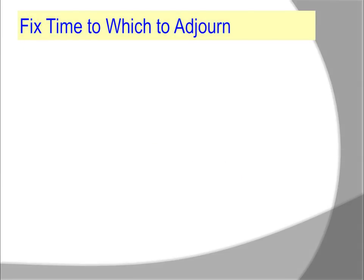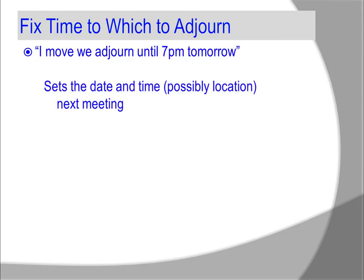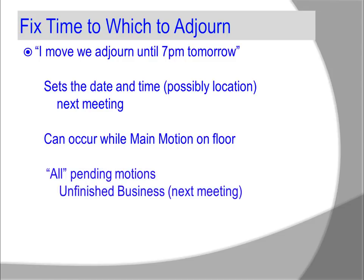What about fixing a time to which to adjourn? 'I move we adjourn until 7 p.m. tomorrow.' This sets the date and possibly location for the next meeting. This can occur while a main motion is on the floor. All pending motions are brought up under unfinished business at the next meeting.